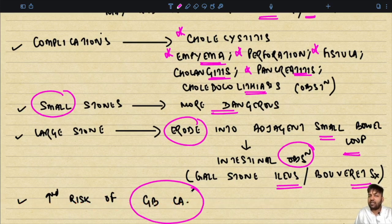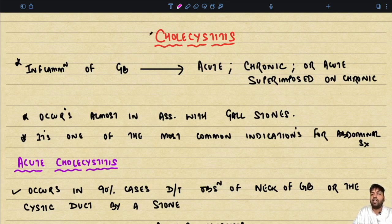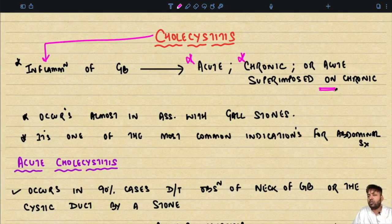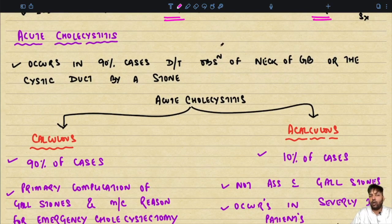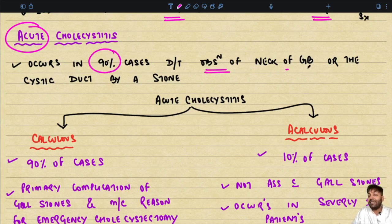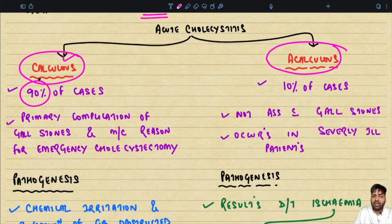Cholecystitis is inflammation of the gallbladder — it can be acute, chronic, or acute superimposed on chronic. It occurs almost always in association with gallstones and is one of the most common indications for abdominal surgery. Acute cholecystitis occurs in 90% of cases due to obstruction of the neck or cystic duct by a small stone. 90% of cases are acute calculous variety; only 10% are acalculous (without gallstone).